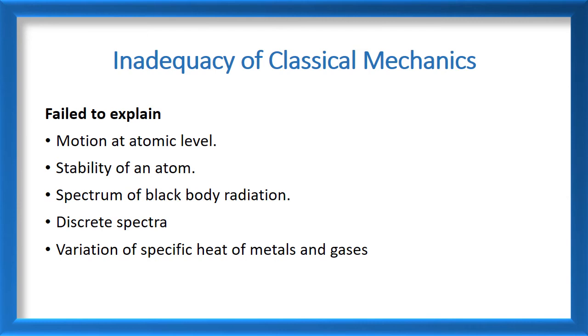Now we will learn certain inadequacies in classical mechanics which led to the evolution of quantum mechanics. The classical mechanics failed to explain these following phenomena. The first one is motion at atomic level. As we are already discussed, the motion at the atomic level is governed by discrete physical properties, such as discrete energy levels, discrete momentum, etc. While the classical world is always continuous, it has continuous energy, continuous momentum. So, this classical world couldn't explain the motion which is happening at the atomic level.